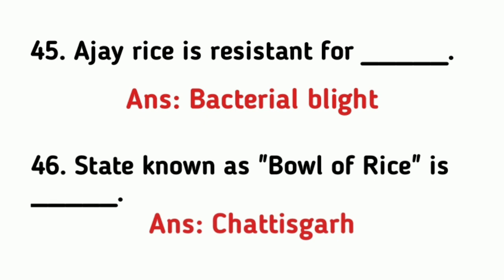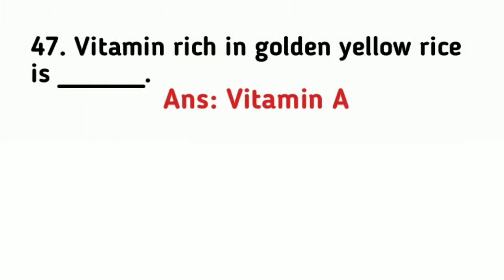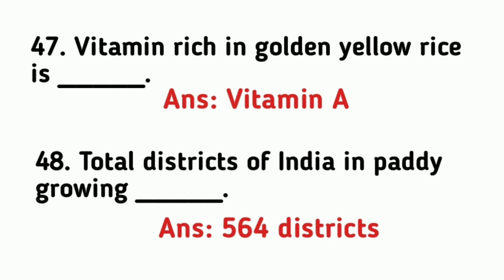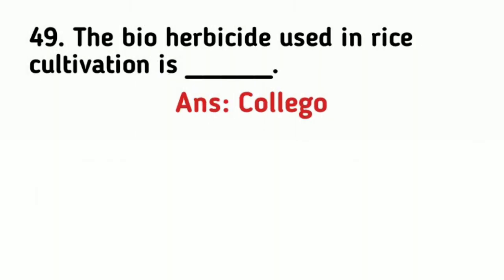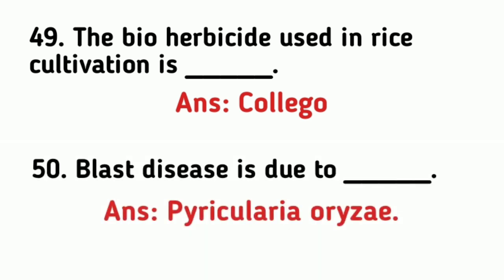The state known as the bowl of rice is Chhattisgarh. The vitamin rich in golden rice is vitamin A. The total districts of India involved in paddy growing is 564 districts. The bioherbicide used in rice cultivation is Collego. Blast disease is due to Pyricularia oryzae.